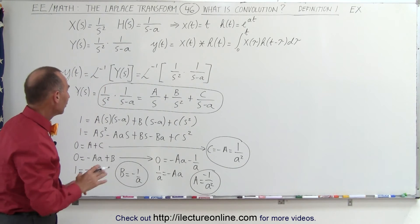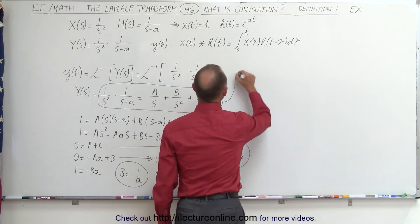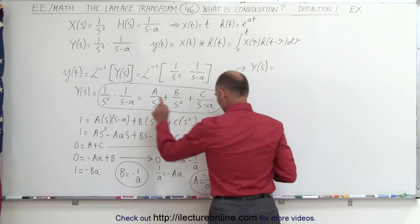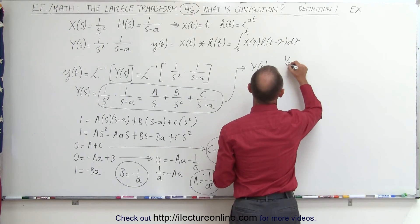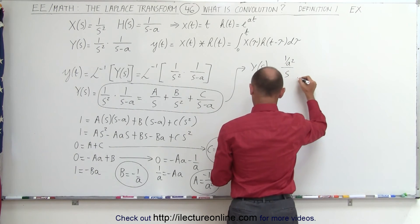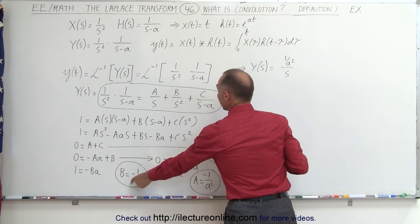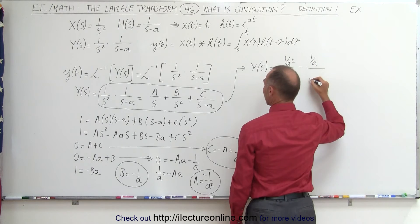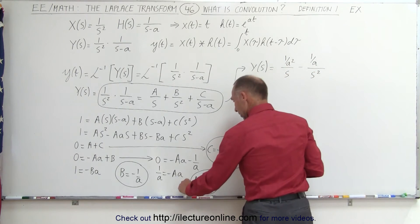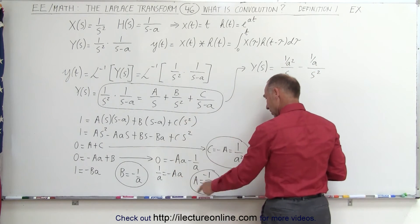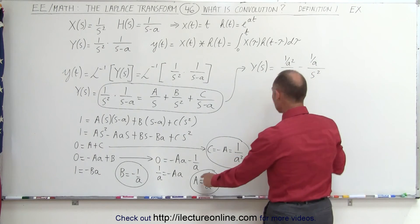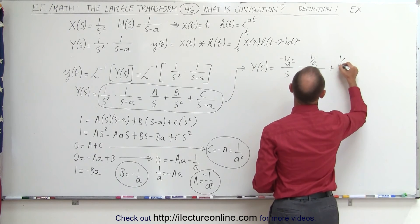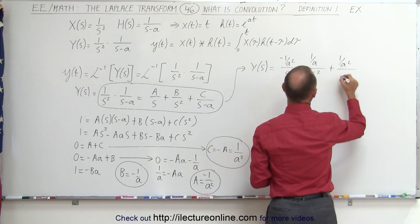Now that we know A, B, and C, we can write Y(s) as: A/s, where A is 1/a², giving us (1/a²)/s; minus B/s², where B is 1/a, giving us minus (1/a)/s²; and plus C/(s - a), where C is 1/a², giving us plus (1/a²)/(s - a).